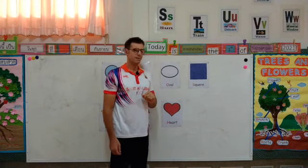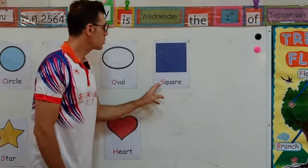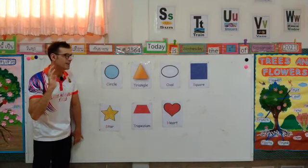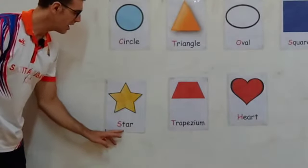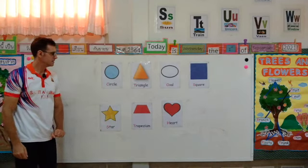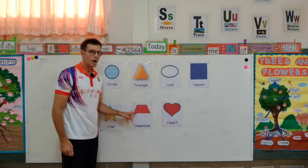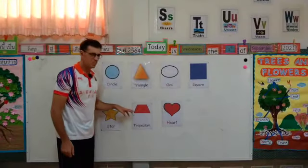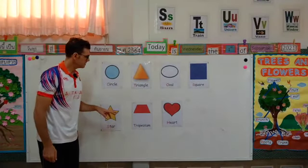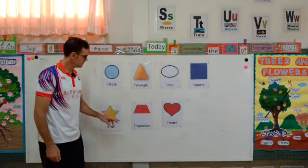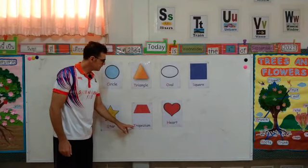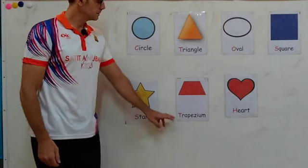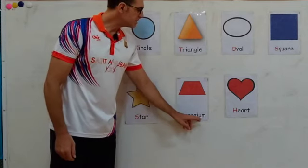Square. Star. This looks like this — no, it's different. This is trapezium.